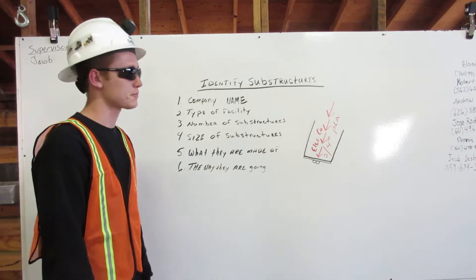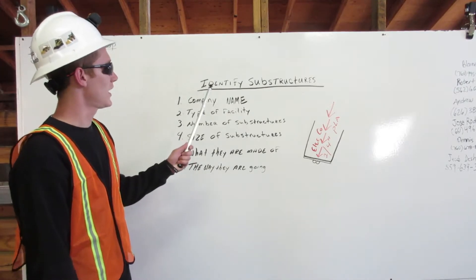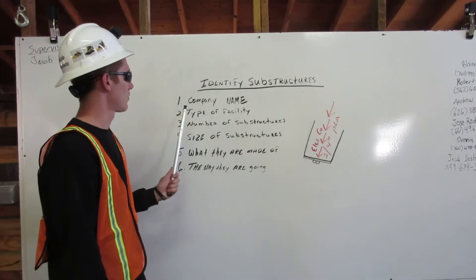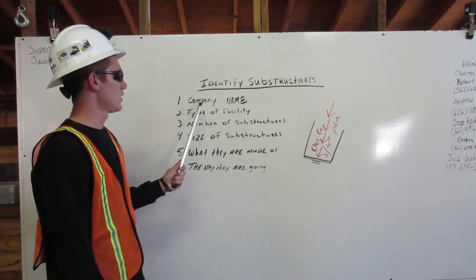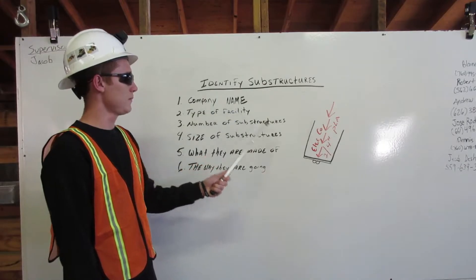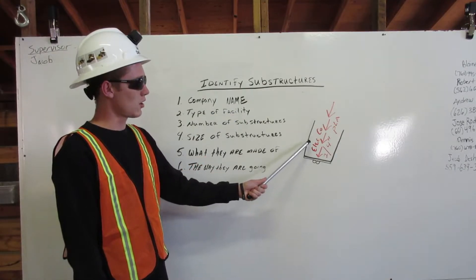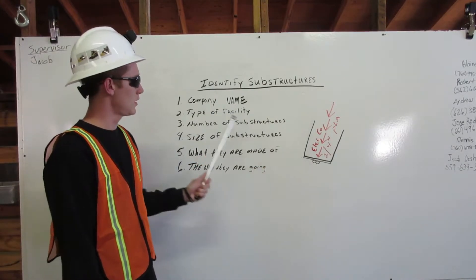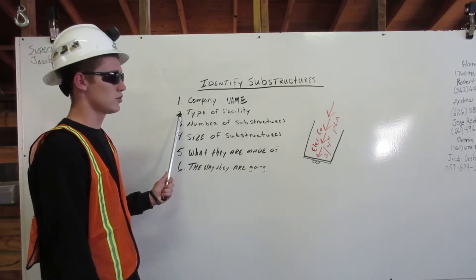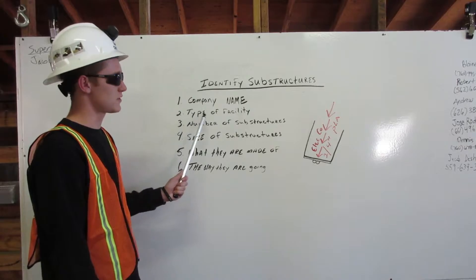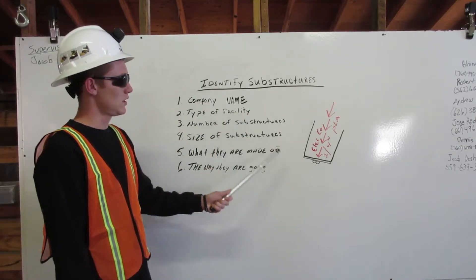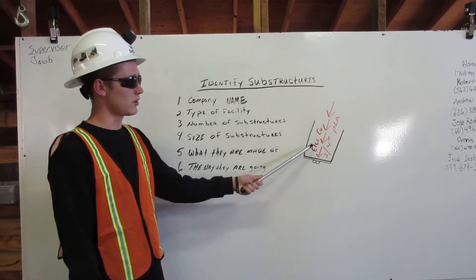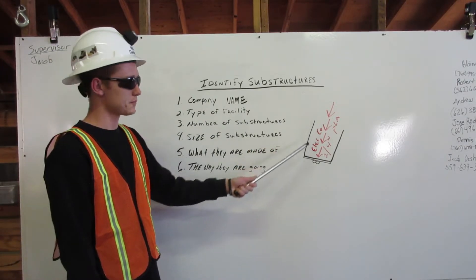Let me show you an example — identifying substructures. Number one, the company name: Electco is the company name. Number two, the type of facility: it is an electric facility because the markings are in red.